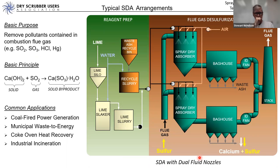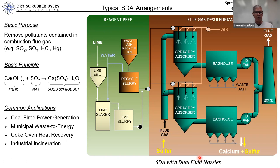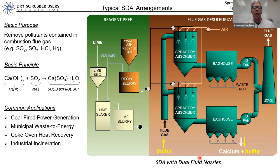The quick answer is economics. In our experience, dual fluid nozzle and rotary atomizer systems have very comparable performance — to meet a 90 percent SO2 removal requirement, or even more, there's not a lot of difference between the two technologies. It comes down to long-term operating costs and what the OEM is offering. The factors that affect performance in a dual fluid nozzle are really the same as the factors that affect performance in the rotary atomizers.